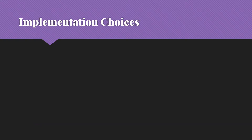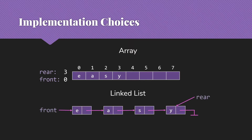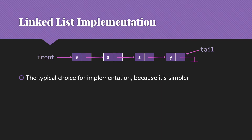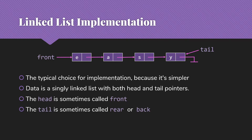We have two major implementation choices: arrays or linked lists. This is very similar again to our stacks, except that in this case it is very clear that the simpler implementation choice is the linked list. The data will be a singly linked list with both head and tail pointers. We typically call the head the front when referring to it as a queue, and then we have the rear or back of the queue, which is the tail of the list.